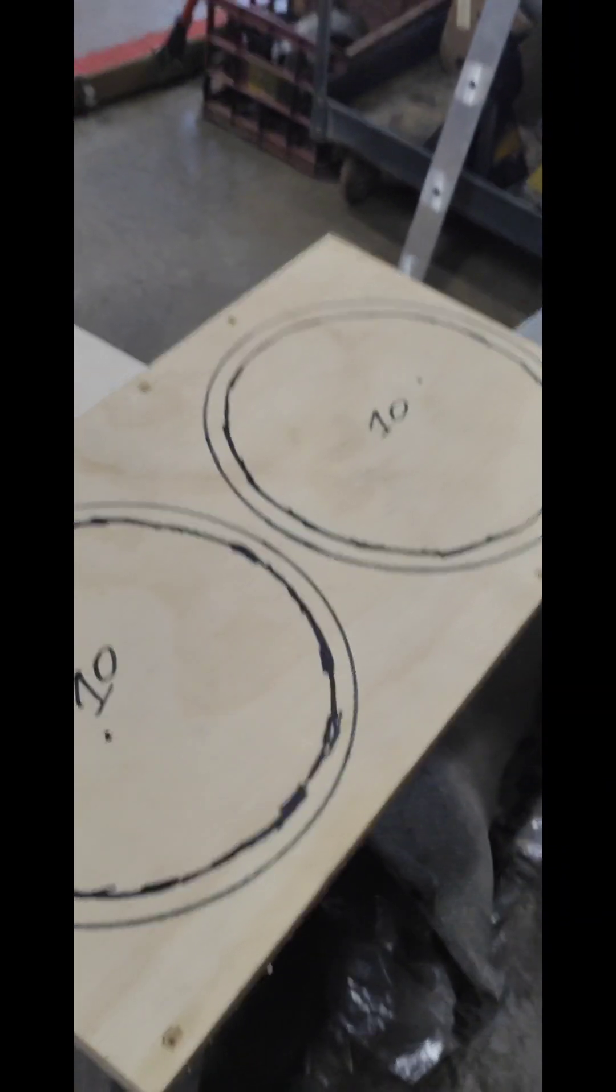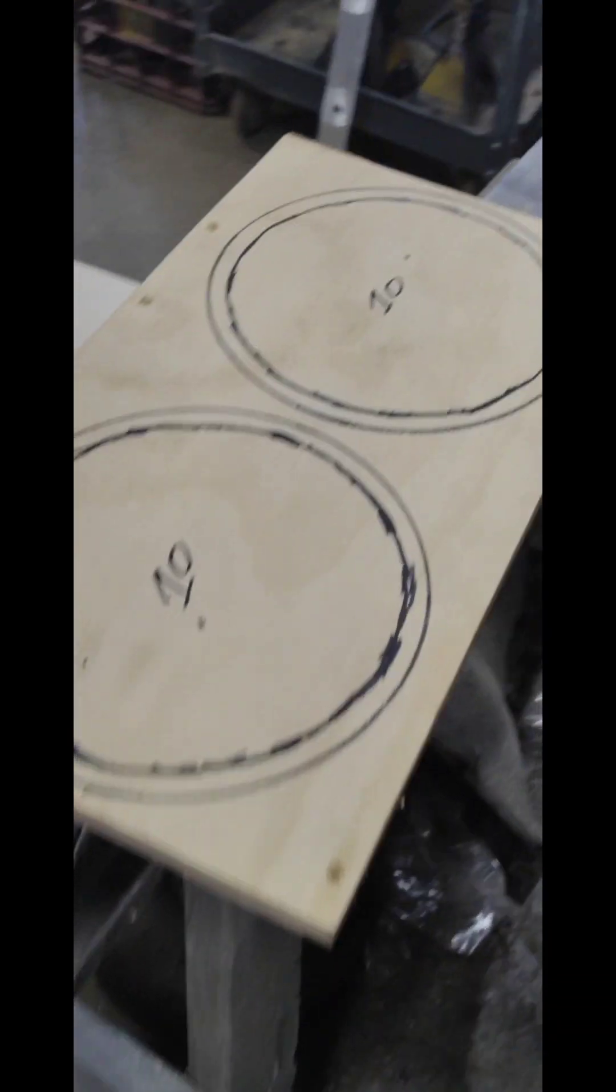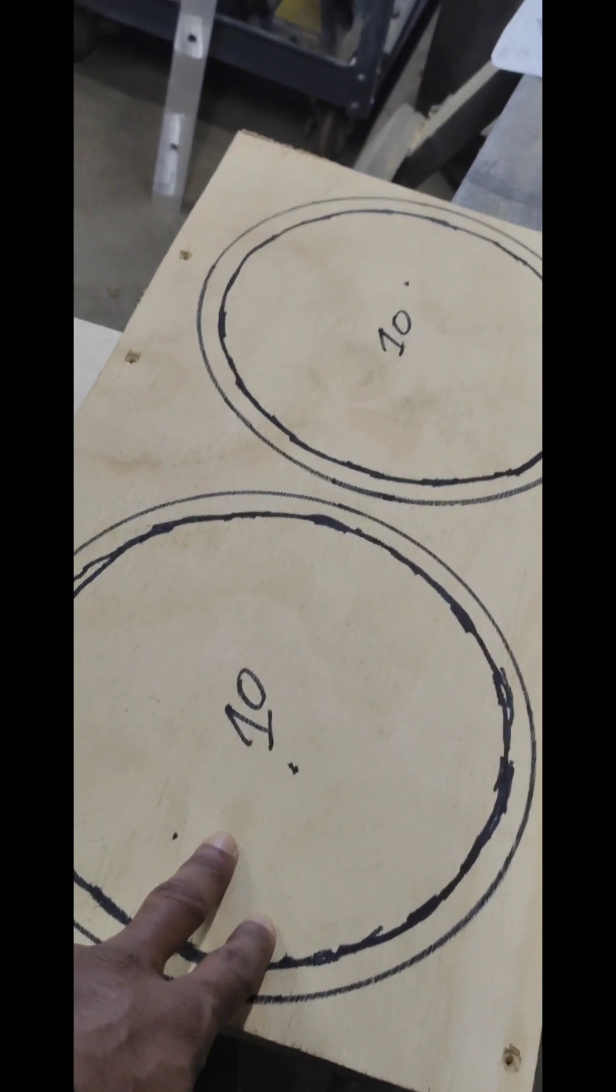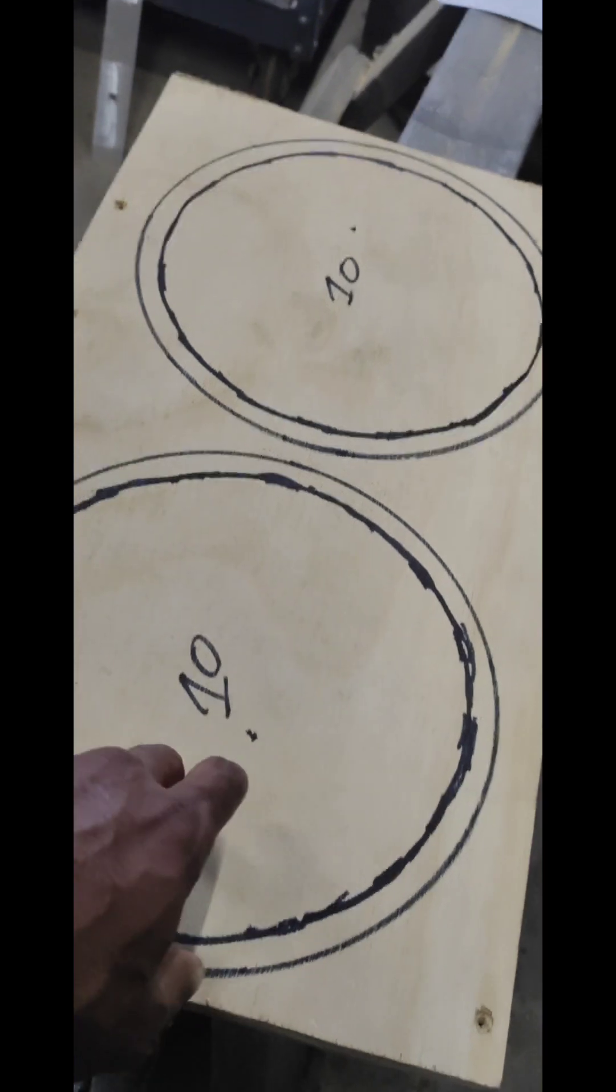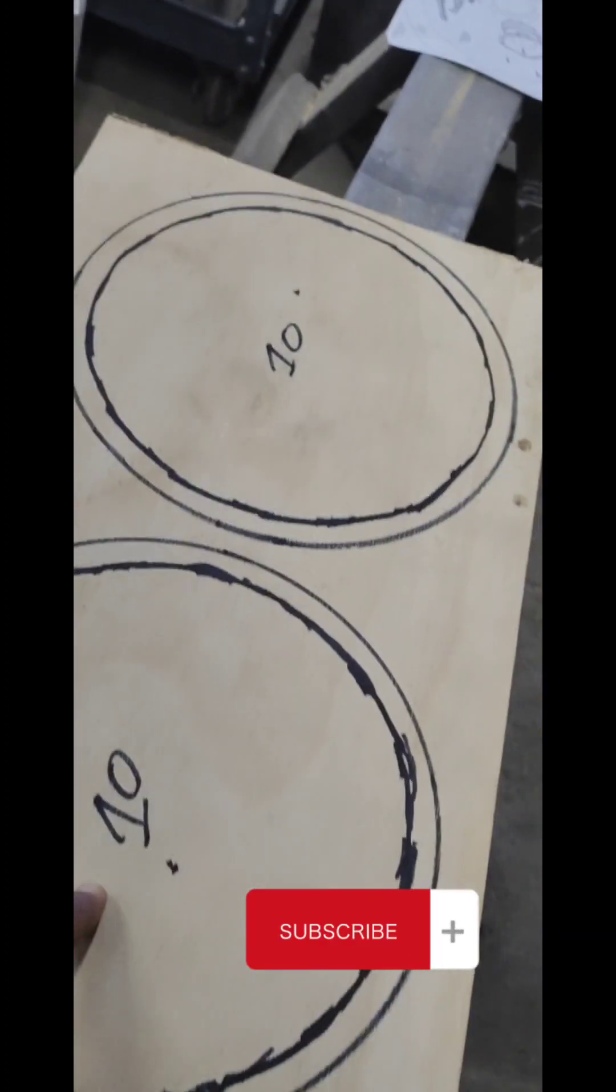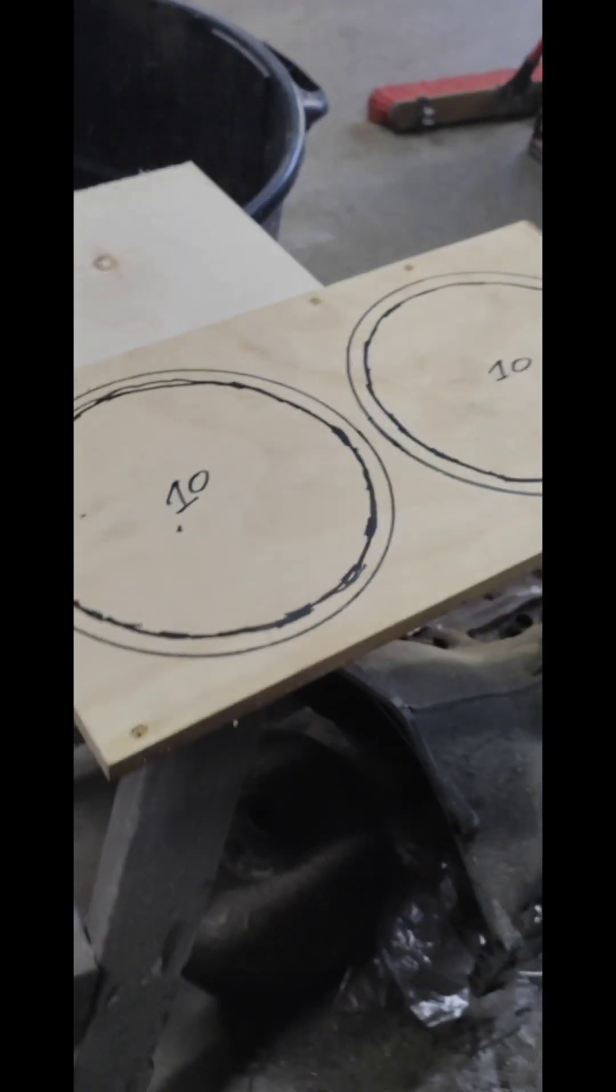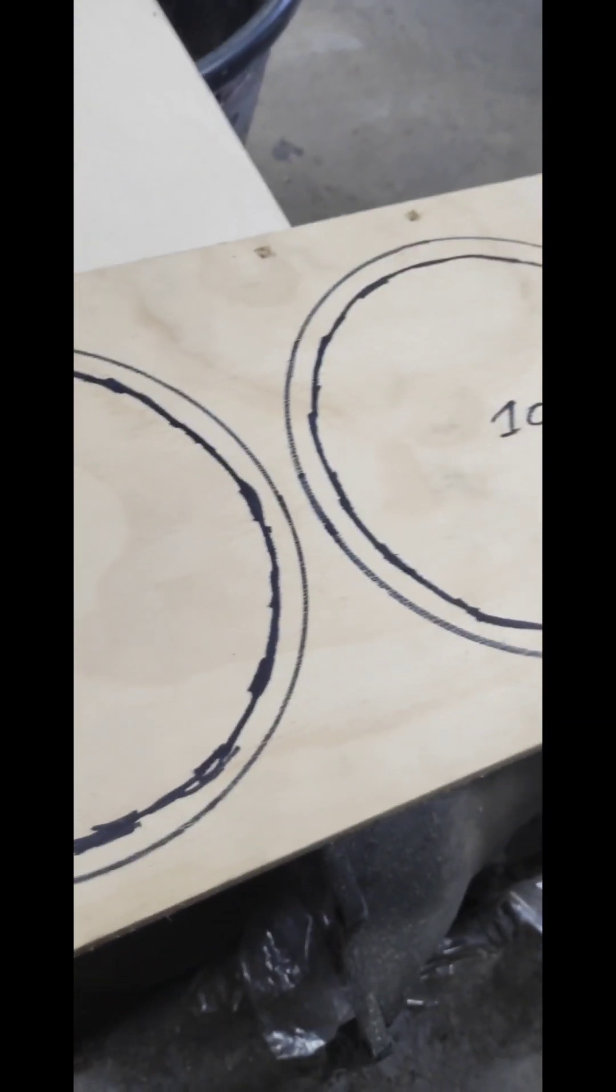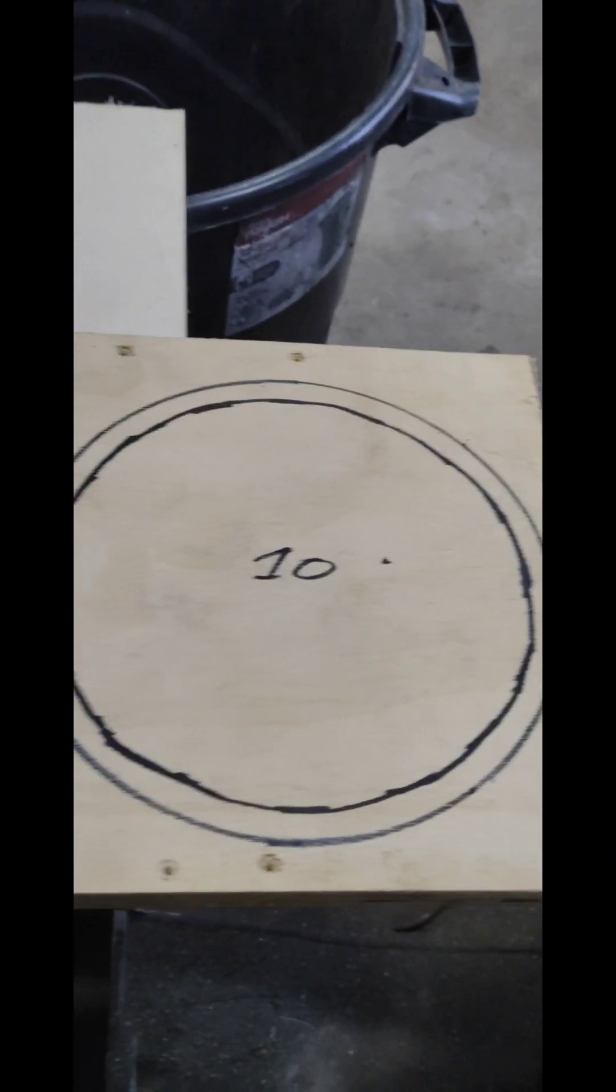So you see we got two 10 inch rings drawn out here. I'm going to leave them like this because I'm going with a different brand than I used to make these templates. I used the audio pipe 10, which ones I ran in the back doors, but I'm going to run some Rockville 10s in the front door.